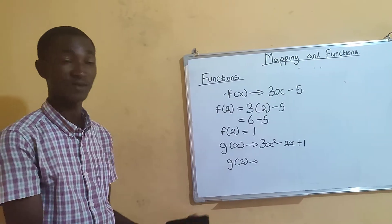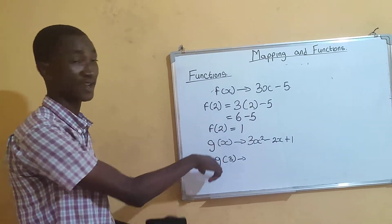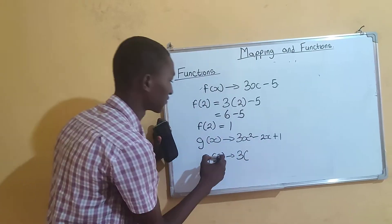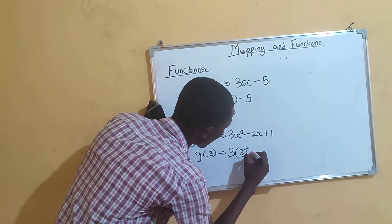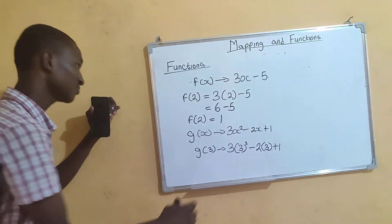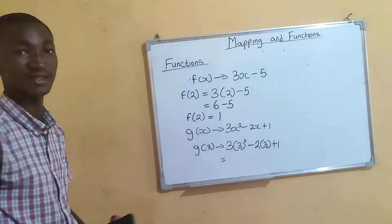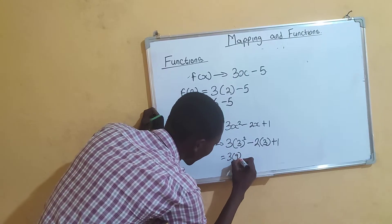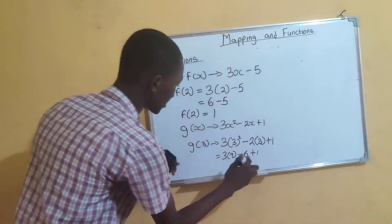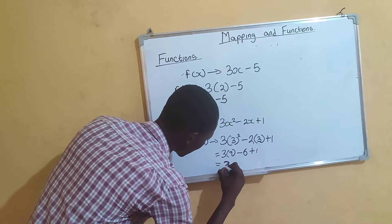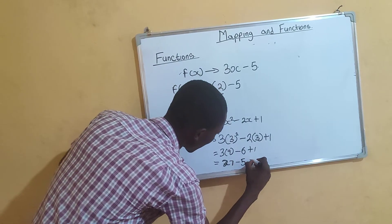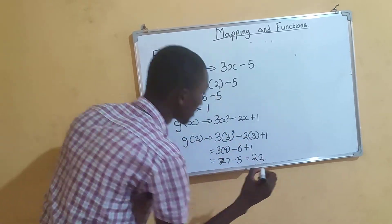To find g(3), replace x with 3 wherever you find x in the quadratic equation. So you get 3(3²) − 2(3) + 1. Since 3² = 9, this becomes 3 × 9 − 6 + 1, which is 27 − 6 + 1. That gives 27 − 5 = 22. So g(3) = 22.